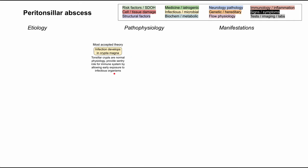However, the bacteria and other pathogens can grow in that space, and if they grow too much and the immune system can't contain them, that leads to the pathophysiology of a peritonsillar abscess.